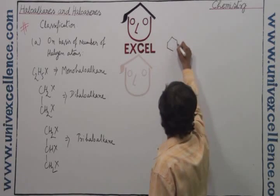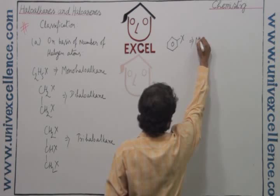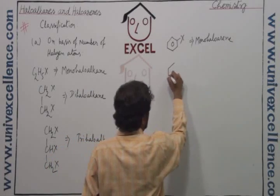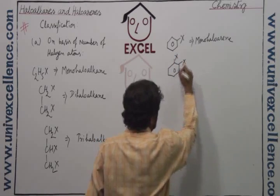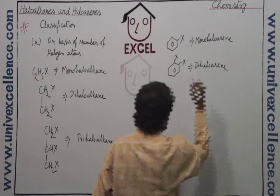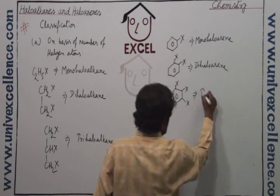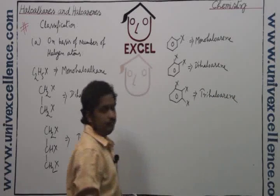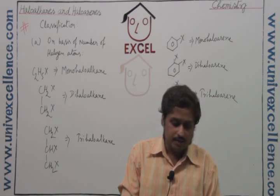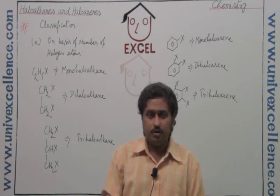Similarly, for aromatic compounds: a benzene ring with one halogen is called a monohaloaryne, with two halogens it is a dihaloaryne, and with three halogens it is a trihaloaryne. Depending on the number of halogens attached to the alkyl or aryl group, these are called monohaloalkane, dihaloalkane, trihaloalkane, etc., or monohaloaryne, dihaloaryne, trihaloaryne, and so on. This is the first classification.